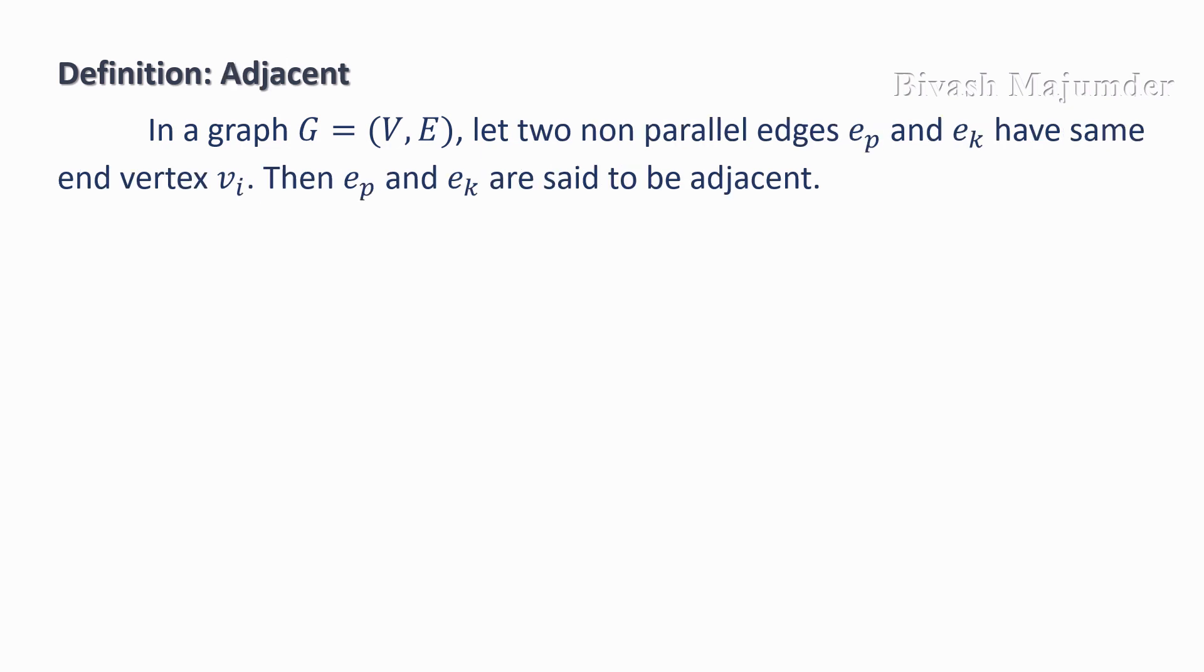Now, we look into the definition of adjacent. In a graph G, let two non-parallel edges ep and ek have the same end vertex vi. Then ep and ek are said to be adjacent.